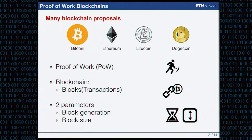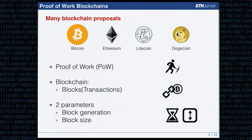There are mainly two parameters that we can tweak in these blockchains in order to change the throughput. The first is the block generation — at what pace do we actually generate blocks. The second parameter is the block size, which basically says how many bytes of transactions can we fit into a block.